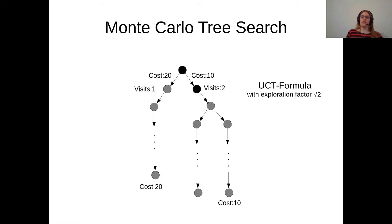This we can also call the exploitation of the best cost and the exploration of new parts of the search space, and to balance that we can use the UCT formula with exploration factor of root 2.